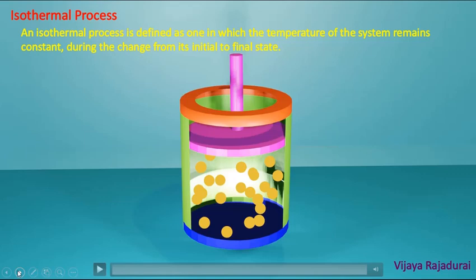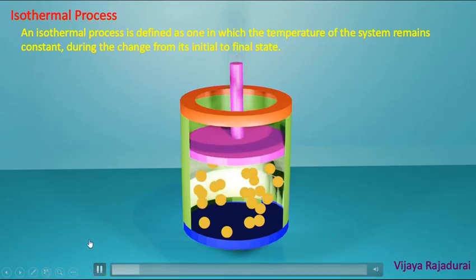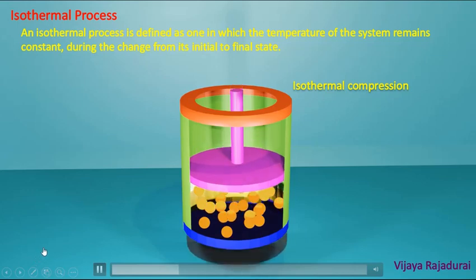Next we see the explanation. Let us consider n number of ideal gas molecules contained in a cylinder having a frictionless piston. Each gas molecule has some pressure and temperature with a particular volume. The bottom of the cylinder is made up of heat conducting material, and the other parts of the cylinder are made up of non-conducting, that is insulated, material.